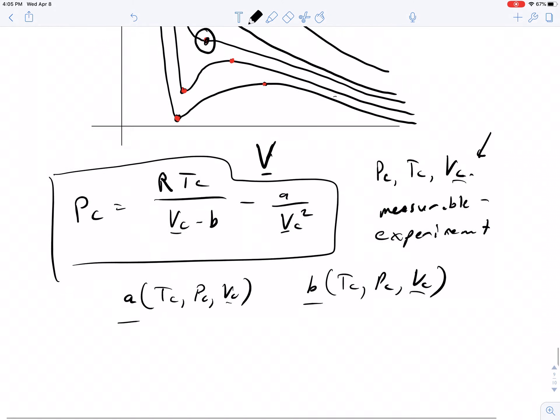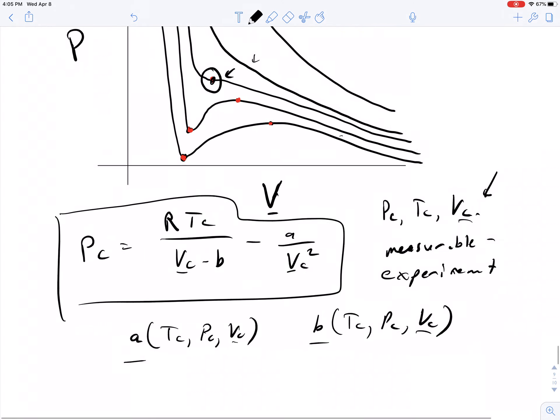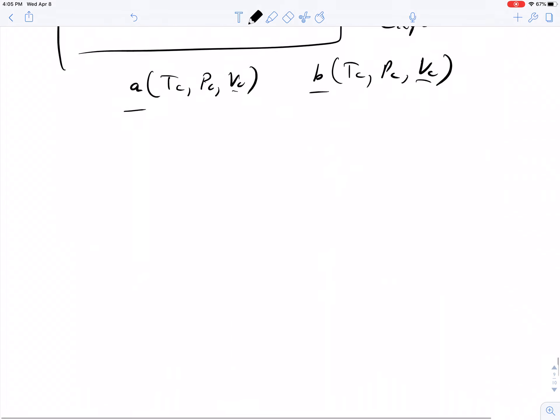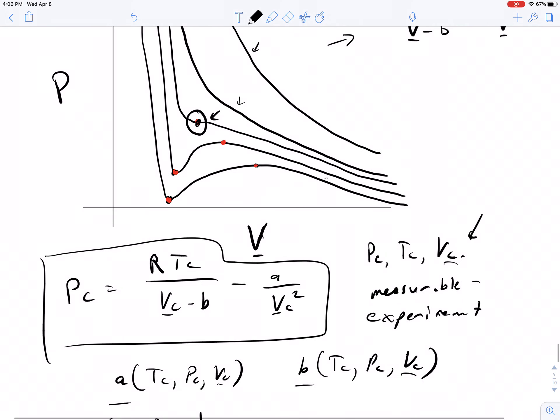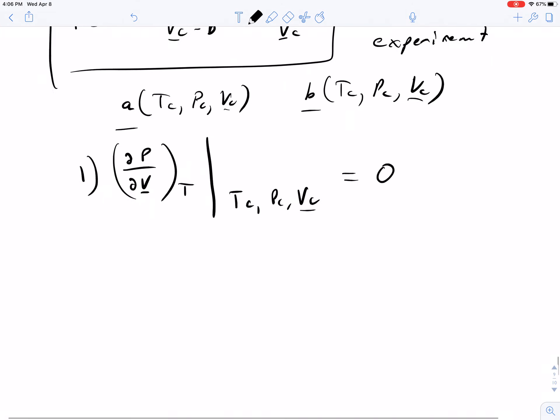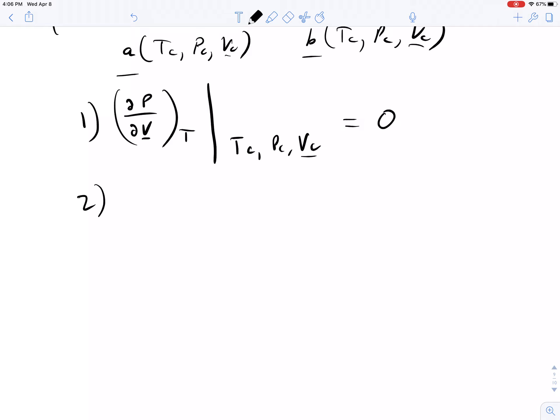At that special point that I've circled right here, there are two other things that have to be true. One is that the derivative goes to zero. So at this point, del P del V at constant T, evaluated at TC, PC, VC, has to equal zero. But also, the inflection point, which is on this curve right here, converges onto the same exact point as the first derivative. So here, the first derivative and the second derivative both go to zero.